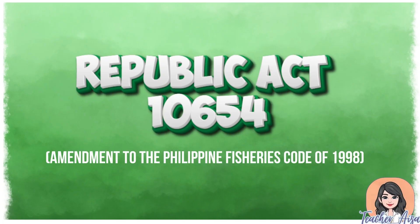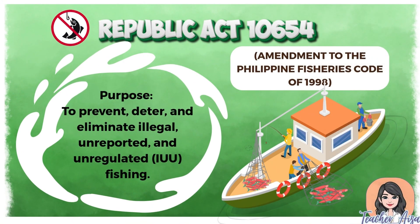Republic Act 10654 is a significant amendment to the Philippine Fisheries Code of 1998, created to strengthen the country's fight against illegal, unreported, and unregulated (IUU) fishing. This law was enacted to ensure that the country's rich marine resources are protected, managed, and used responsibly for the benefit of both present and future generations.